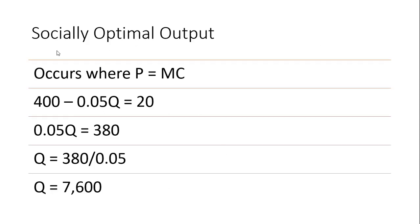Let's contrast that with the socially optimal output level. That occurs where price equals marginal cost, just like in perfect competition. Setting our inverse demand equation equal to marginal cost and solving for Q: subtracting 20 from 400 gives us 380, and dividing by 0.05 gives Q equals 7,600 units — that is the socially optimal output level. The price at that point would be $20, since price equals marginal cost.